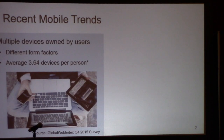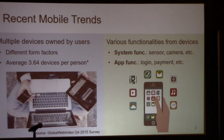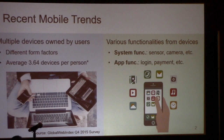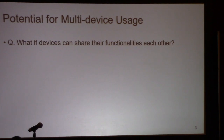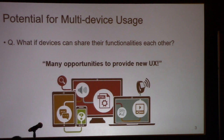In the center, there are two mobile apps. One is that this is very useful for users to deploy particular devices with different capabilities. Second, devices can provide various functionalities — there are system functionalities like camera, sensor, and app functionalities such as login, payment, and so on. Considering these trends, many users will want to use devices efficiently. What if devices can share their functionalities with each other? There must be many opportunities to provide new user experiences, as shown in these use cases.